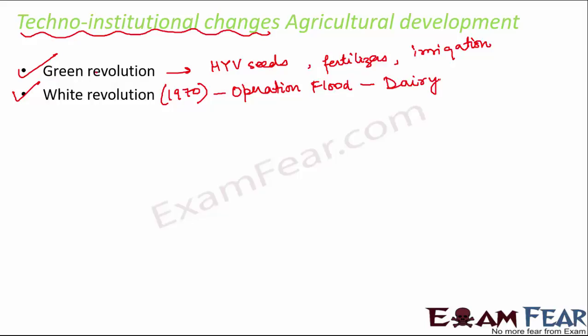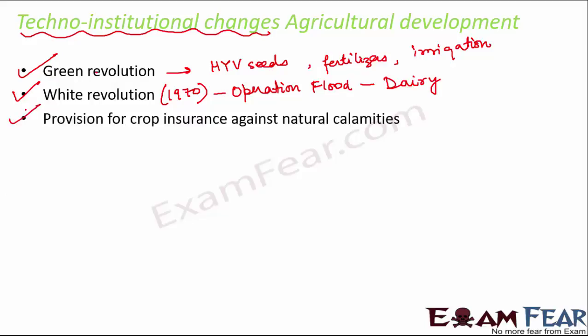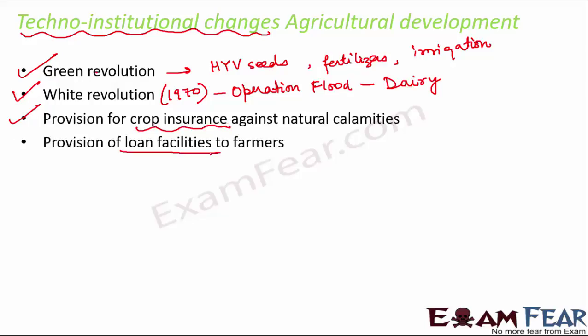White revolution was specific to dairy — making milk and dairy products like ghee, butter, paneer, and cheese reachable to all parts of the country. Next, provisions were made for crop insurance against natural calamities. Sometimes there is a flood, fire, or disease in a particular crop, causing huge amounts of crop to be wasted. Insurance was provided for crops so that farmers do not suffer too much loss.